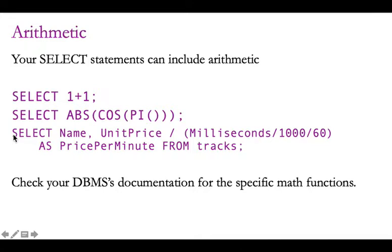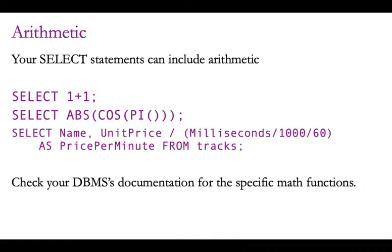More relevantly, this third example selects the name and then some formula — we're applying a formula to different columns. In this case we're looking at a music database, taking the unit price of the song — the price per song — dividing by the length of the song in milliseconds, divided by 1000 to convert from milliseconds to seconds, and dividing by 60 to convert from seconds to minutes. So it's the price divided by the number of minutes, and we're aliasing that as price_per_minute. The output will say price_per_minute and list the prices per minute for all tracks.